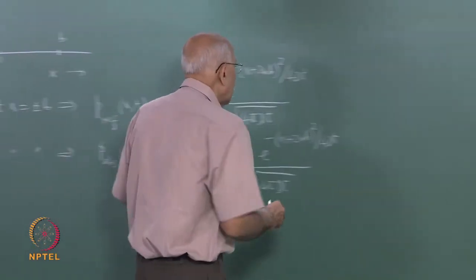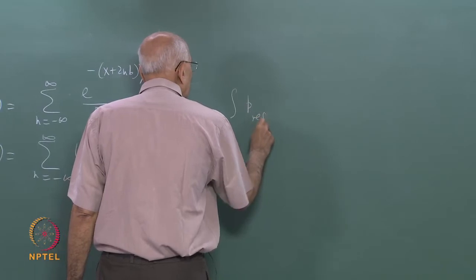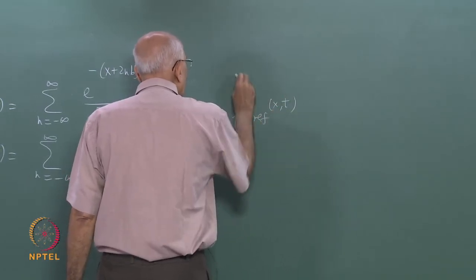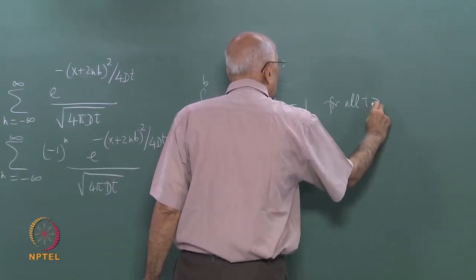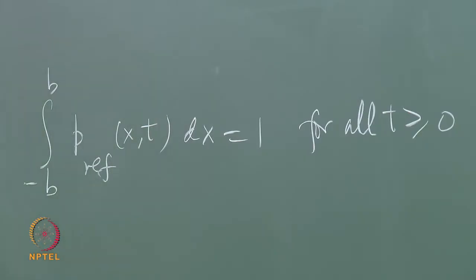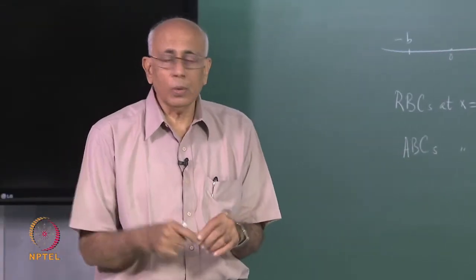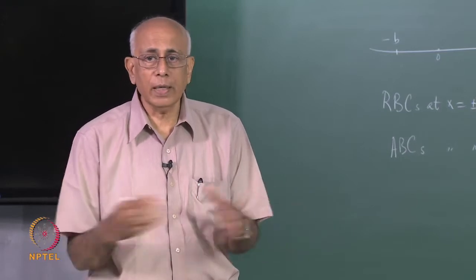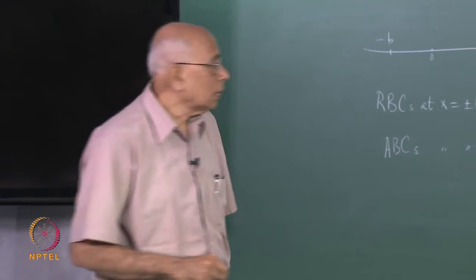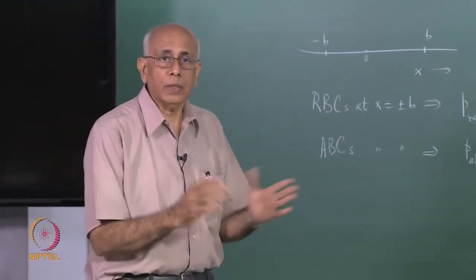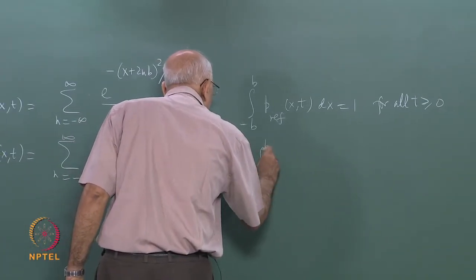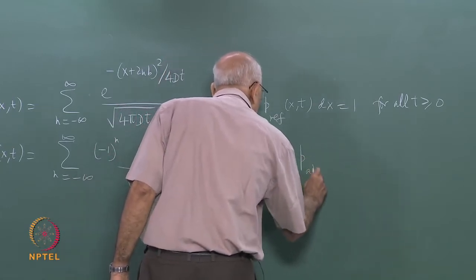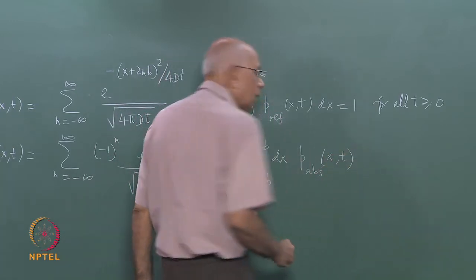In the reflecting case, I am guaranteed that the integral of p_reflecting from minus b to b dx equals 1 for all t ≥ 0. That is no longer true with absorbers at the two ends, because the diffusing particle could hit either endpoint and get absorbed, or leak through the barrier. In either case, the integral of p_absorbing from minus b to b is not equal to 1.